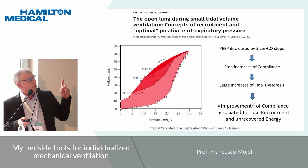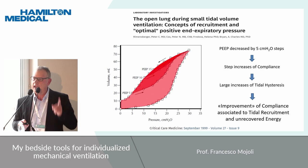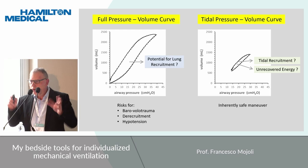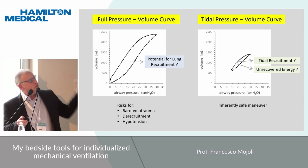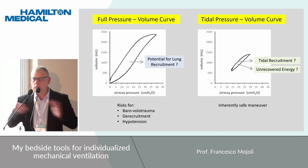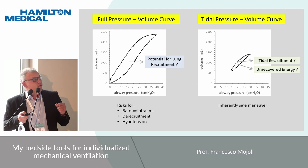This is respiratory physiology. From a physics point of view, tidal hysteresis is the amount of unrecovered energy — the amount of energy dissipated in the lung tissue each breath. So, same single tool, we can use it two different ways: a full pressure volume curve when we want to test the lung recruitability in our patient, or a tidal pressure volume curve from PIP to plateau and back if we want to assess the unrecovered energy.